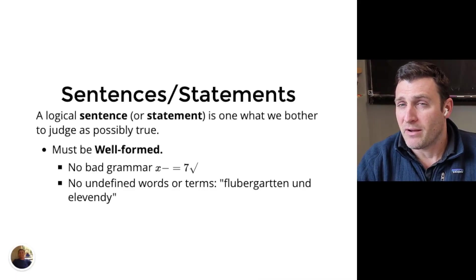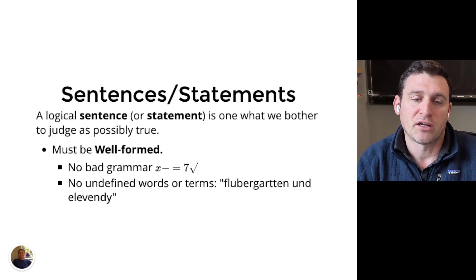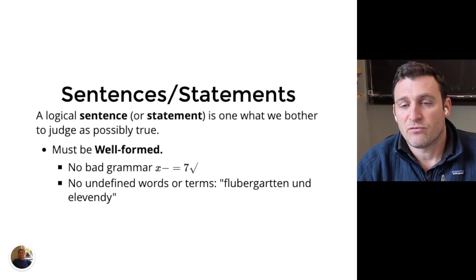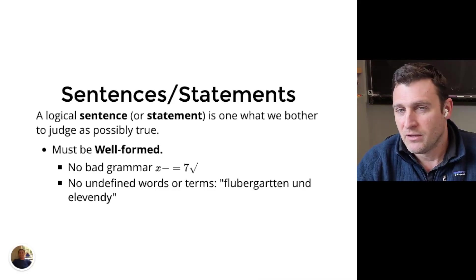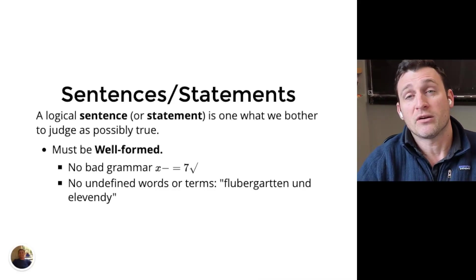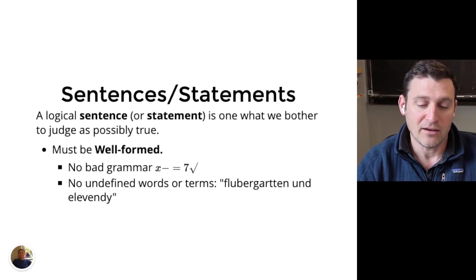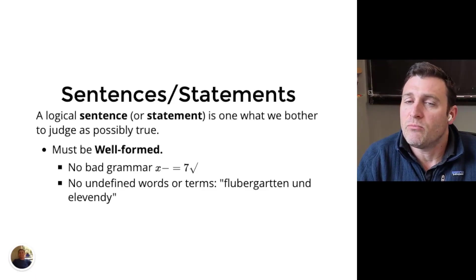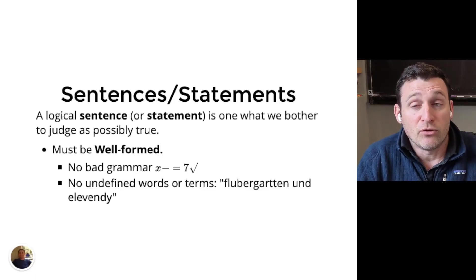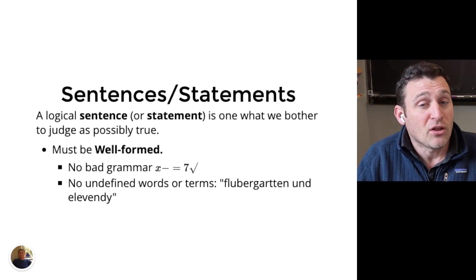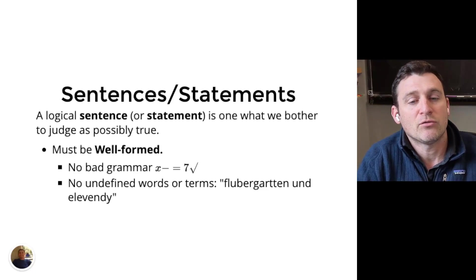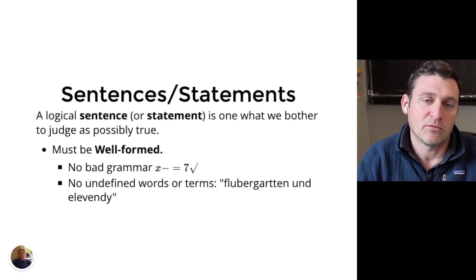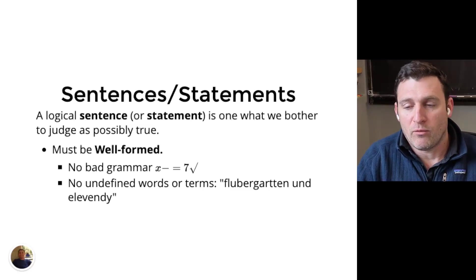The other thing we want to do is avoid words that don't really have a meaning to the context. Similarly, if I just made up a symbol, this phrase I have here, Flübergarten und eleventy. Eleventy is not a number, and Flübergarten is a made-up phrase. But what I have to be careful of is that I don't bring meaning from a place that not everybody is in. We have to remember that we're only going to give truth statements that we can all understand.